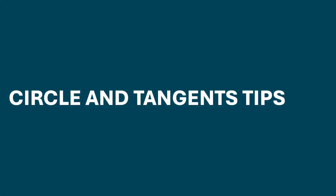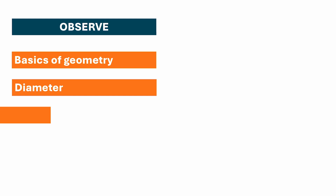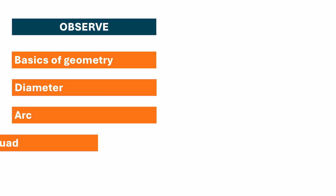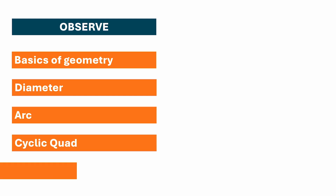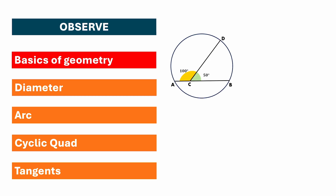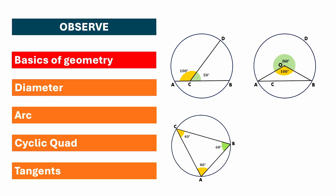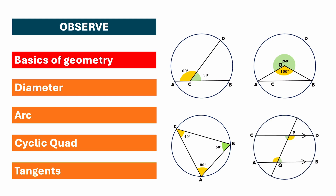Whenever you get a question based on circles and tangents, there are a few things to observe to solve it. These include basics of geometry, the diameter, look for an arc, cyclic quadrilateral, and tangents. For basics of geometry, you might see straight line properties, reflex angle properties, triangle properties, and parallel line properties. Also pay attention to isosceles triangle properties.